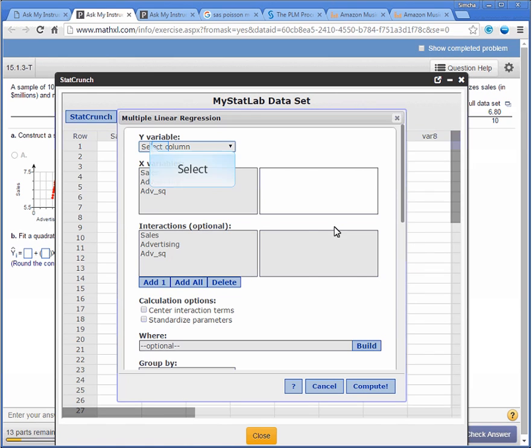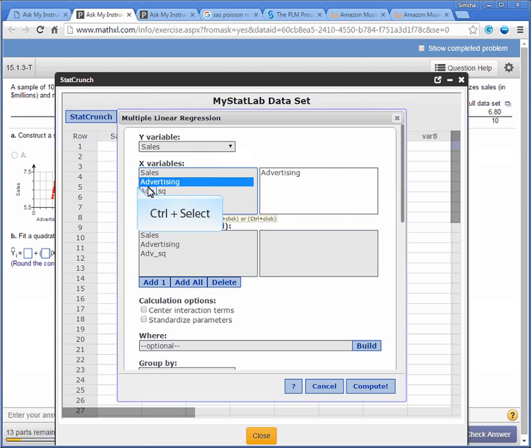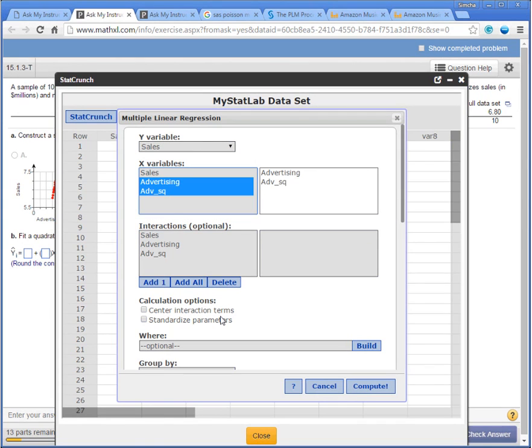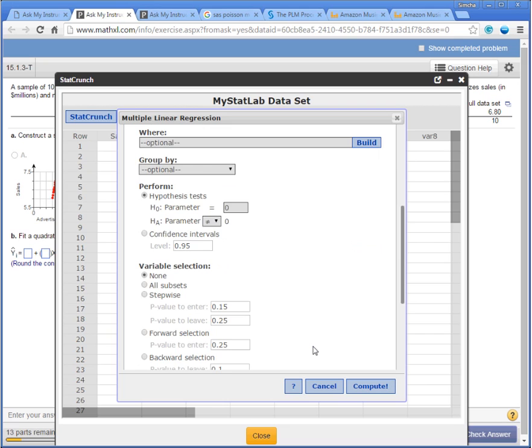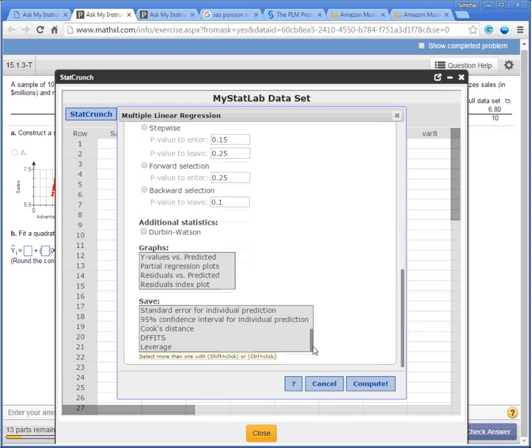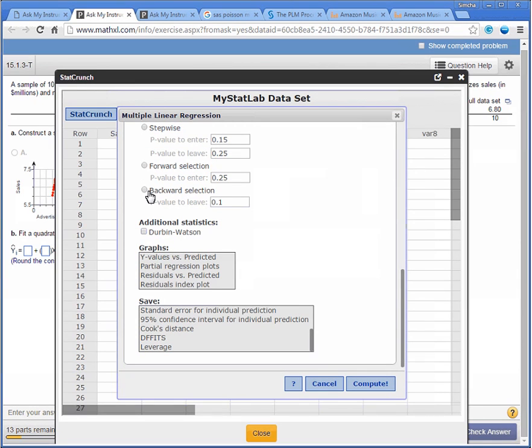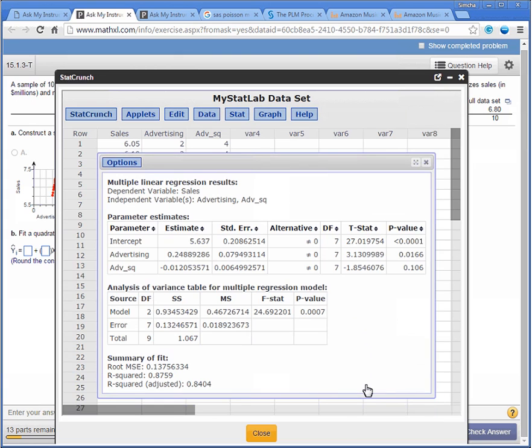The Y variable is going to be the sales. That's the dependent variable. And for the X variables, by clicking on this and keeping your finger on control, you get both of them. We don't want any interaction. We do want to perform the hypothesis testing. So basically there are no more options to choose. And so let's compute.